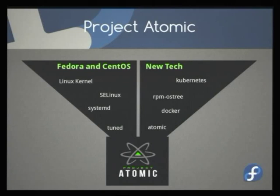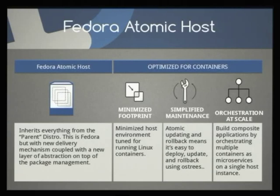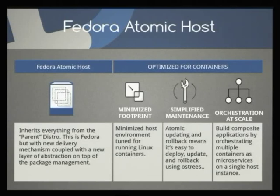We have both Fedora and CentOS, because both are working with the upstream Project Atomic team to create Atomic-technology-based distributions. Being part of the Fedora team, I'm going to talk specifically about the Fedora Project Atomic, but our friends in CentOS land are working with us and with the upstream as well. It inherits everything from the parent distro — everything you previously had in terms of your RPM sets, the standard tools, those kinds of things. What's changing is the delivery mechanism by which we update our system.